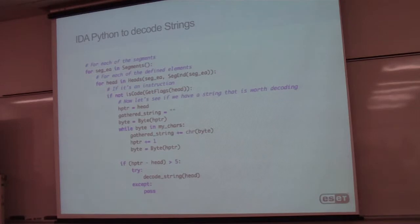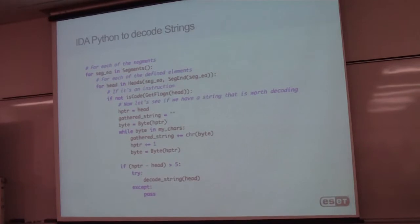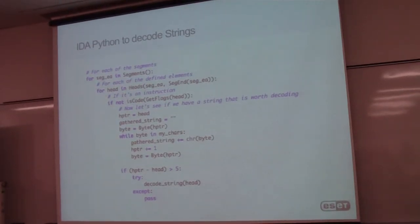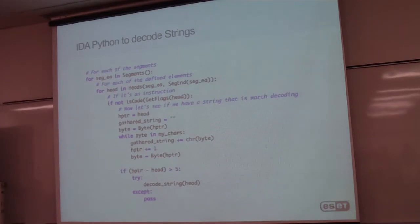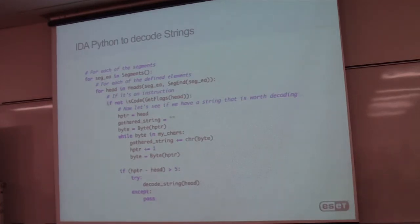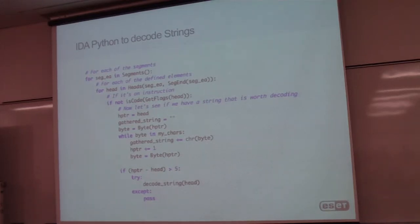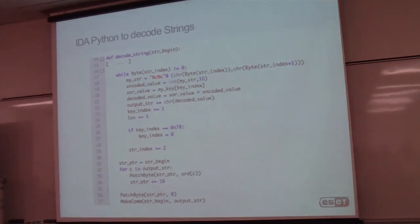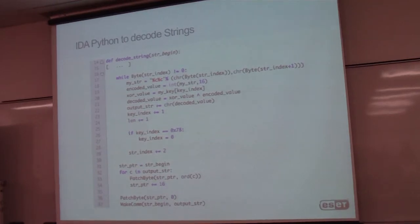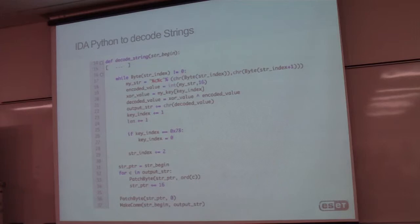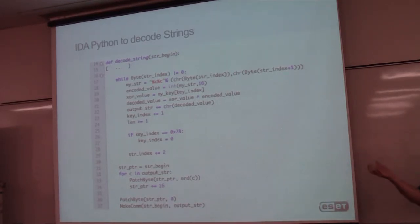In IDA Python you have a complete interface that lets you play with memory and the bytes of the program and modify them. What my script does is go through all the segments of a PE file, look for all the heads — the start of structures in memory — check if it's not code (since I want to decrypt strings), and validate if it looks like a string, meaning there's a list of characters. Once I validate that, I call my string decode routine. The decoding routine is exactly the opposite of what was implemented inside the malware — it just XORs all the characters inside the string with the key that is hardcoded in the binary.